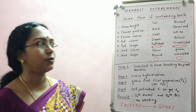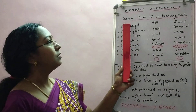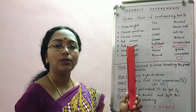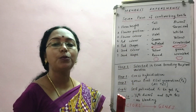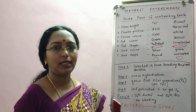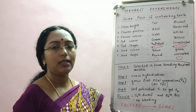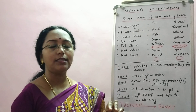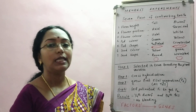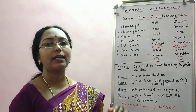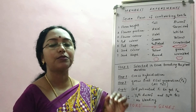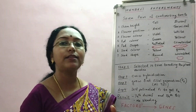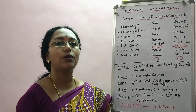So what were his samples? As mentioned, his samples were true breeding pea plant varieties. He focused on seven main characteristics of the pea plant. Let us see one by one what those characteristics were.